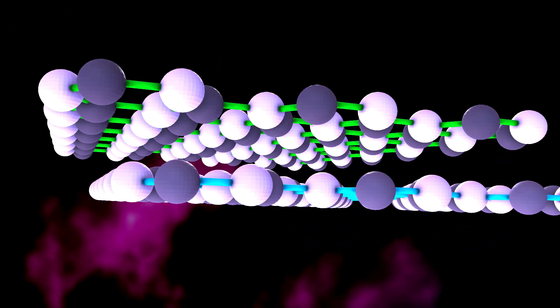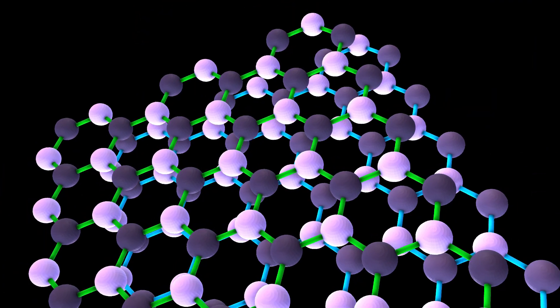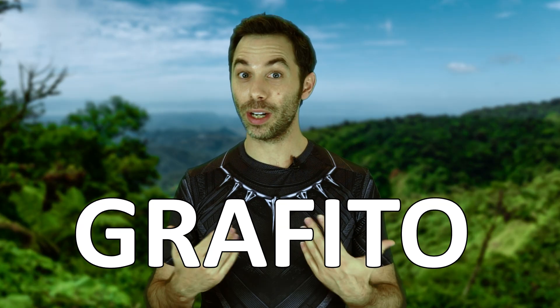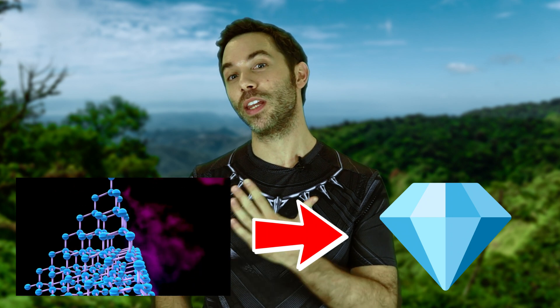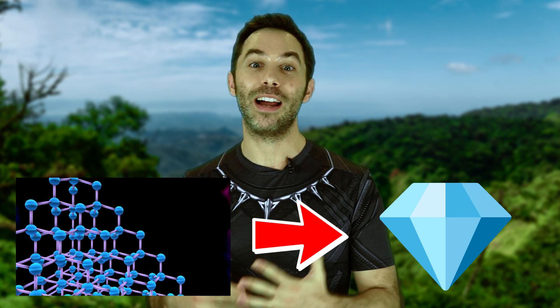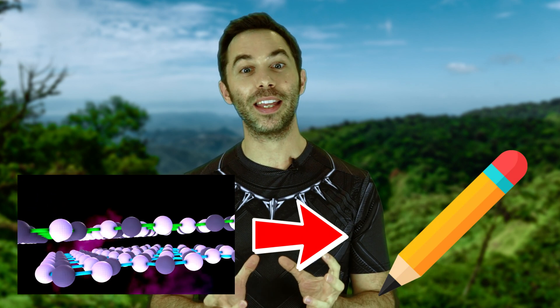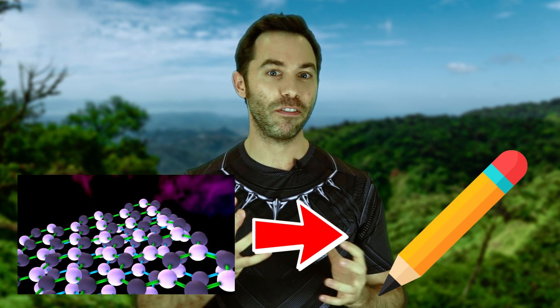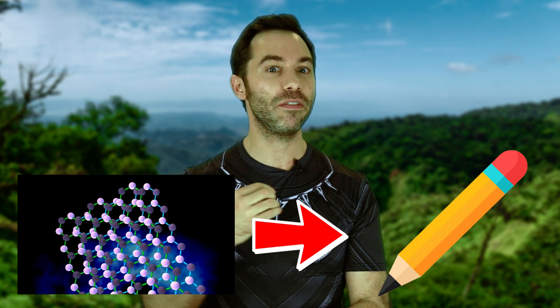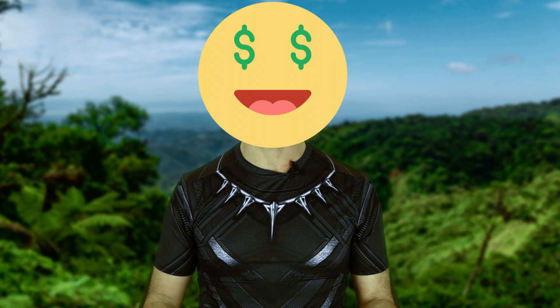Pero si el carbono, en lugar de enlazarse con otros cuatro átomos, lo hace con tres, entonces se dispone de esta forma hexagonal, que conocemos como grafito. Y tú dirás: si el grafito y el diamante no se parecen en nada, ¿cómo van a estar formados de lo mismo? Efectivamente, eso es lo que quiero que entiendas. Aunque ambos son 100% carbono, la forma en la que se ha estructurado el material hace que sean materiales diferentes, con formas diferentes, propiedades diferentes y precios muy diferentes.